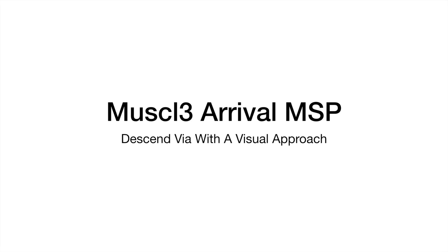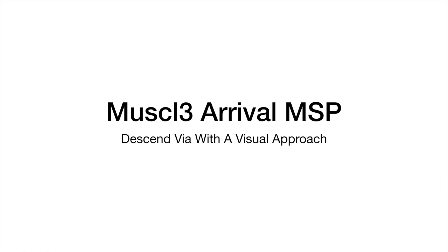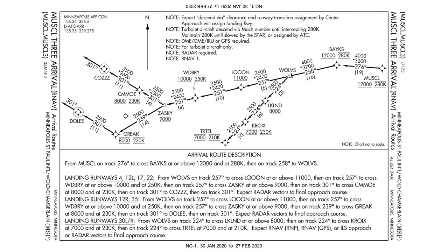So let's look at the Muscle 3 arrival into Minneapolis-St. Paul. It's a descend via with a visual approach is what we got going into Minneapolis-St. Paul. First of all, let's take a quick peek at it. It's a Minneapolis 3 arrival, the CUDA transition, and this is actually the transition page, and then the next page is actually the arrival routes into Minneapolis-St. Paul.